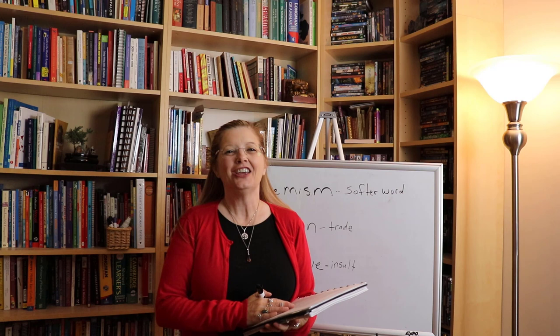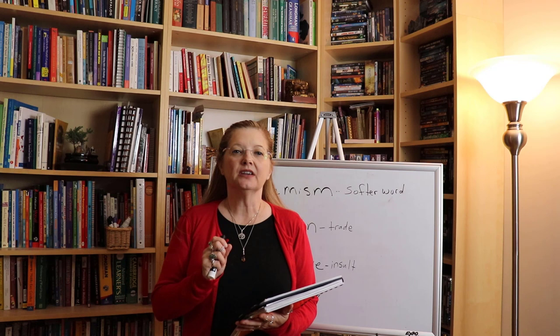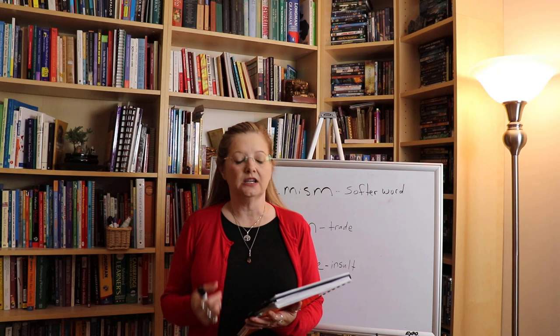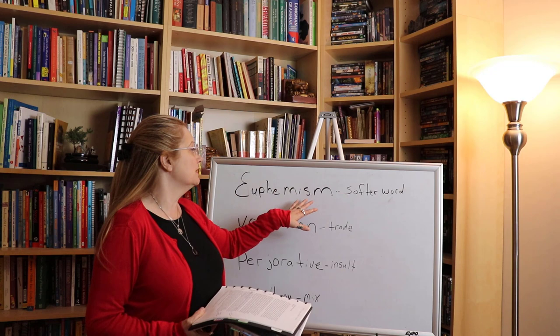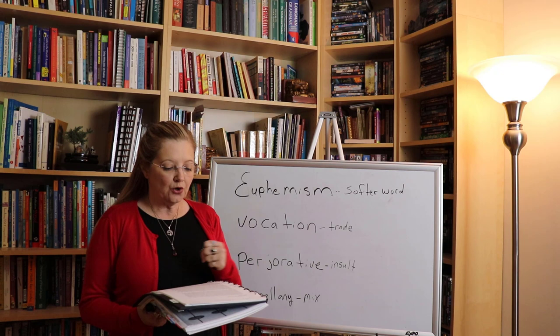Today we're talking about Mike Rose's 'I Just Want to Be Average,' and it's a great article. There's a lot of vocabulary in this article that might be confusing, but some of it we can discount. We don't have to understand every word, but some important vocabulary around important ideas we do have to understand, and one of these words is euphemism — a very important word in the context of vocational, which is an important concept in this article.